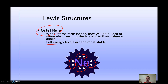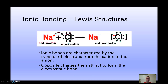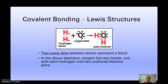The octet rule is that when things bond, they want eight electrons in their valence shell. For ionic bonding, a single electron is transferred over — depicted in red to show the electron that came from sodium. We're transferring electrons from the cation to the anion, and then opposite charges attract.